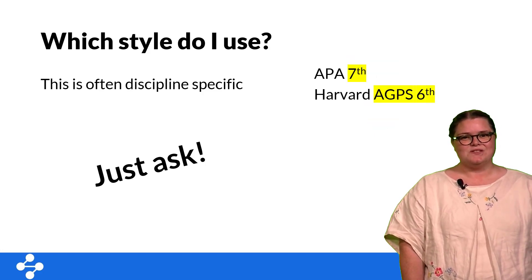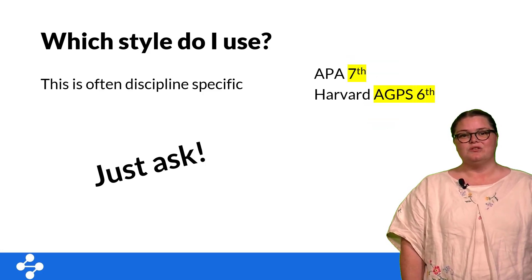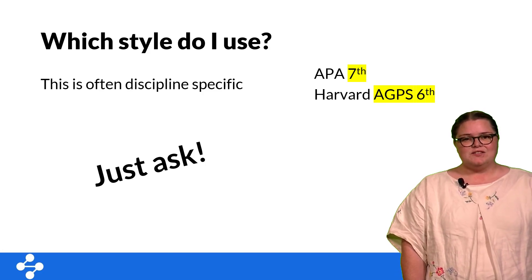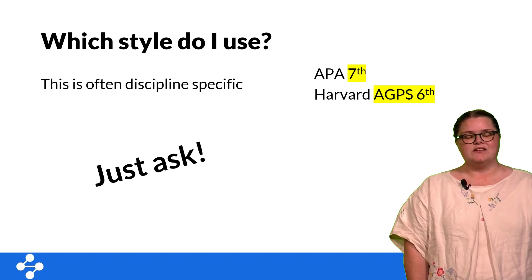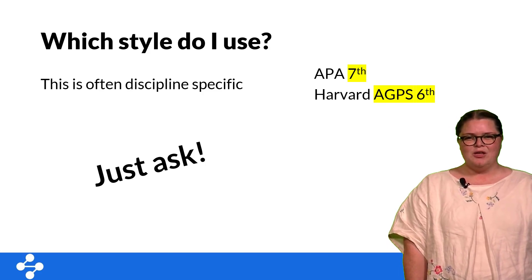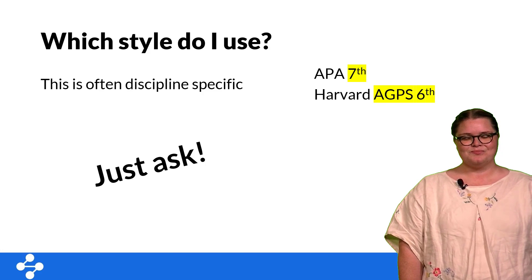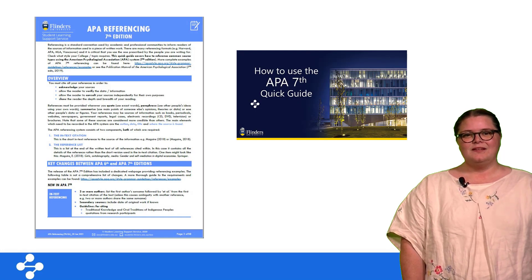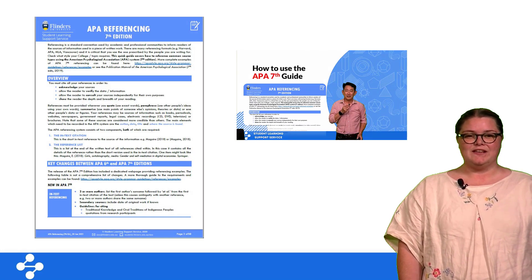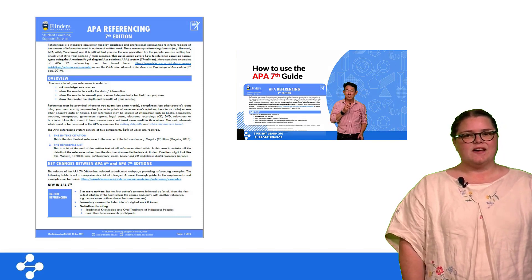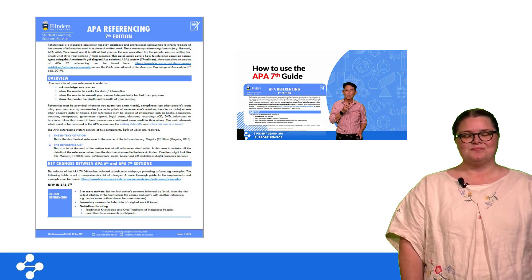It's also important to make sure you're using the correct edition or version of the referencing style. APA has just updated to its seventh edition, while the Harvard style in Australia, AGPS 6, will be different to international Harvard styles. The best piece of advice I can give you is to follow a referencing guide, and the good news is that Flinders provides these guides for the common referencing styles.